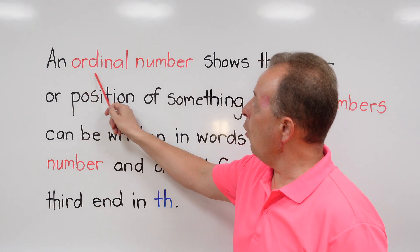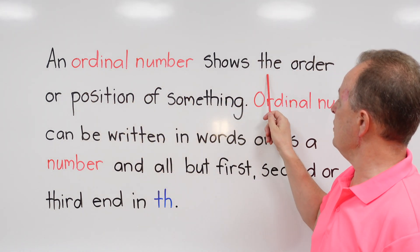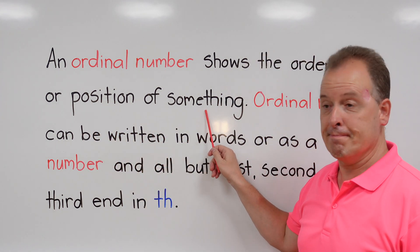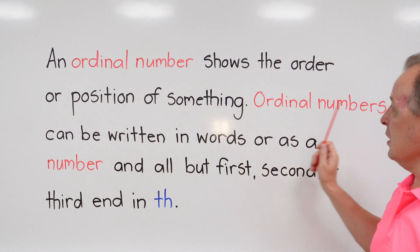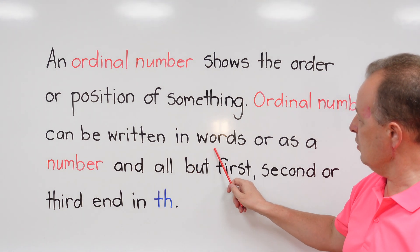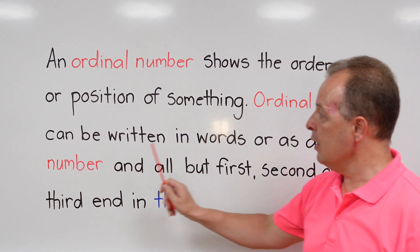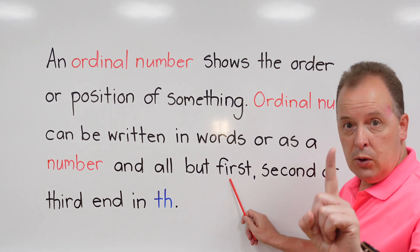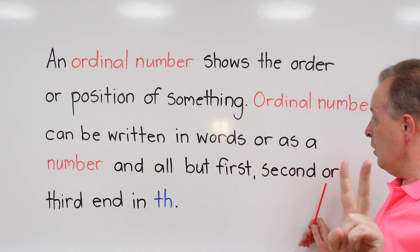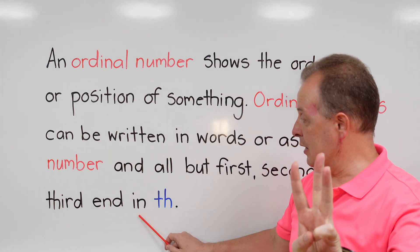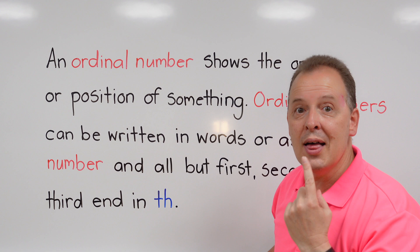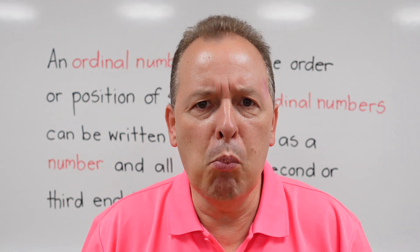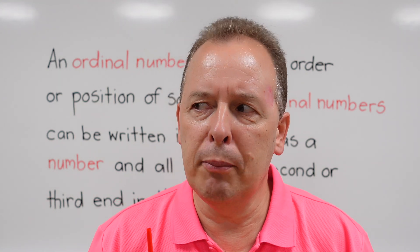It says an ordinal number shows the order or position of something. Ordinal numbers can be written in words or as a number. And all but first, second, or third end in th. I understand that, but we need to simplify more. I'm going to think about it for a minute. I'll be back.